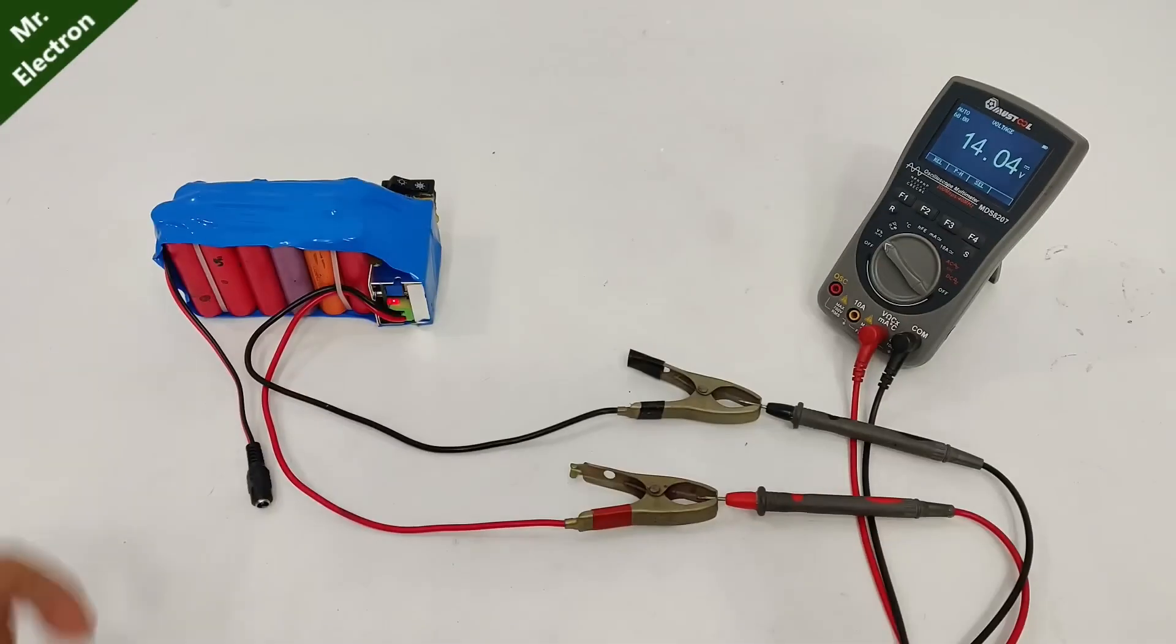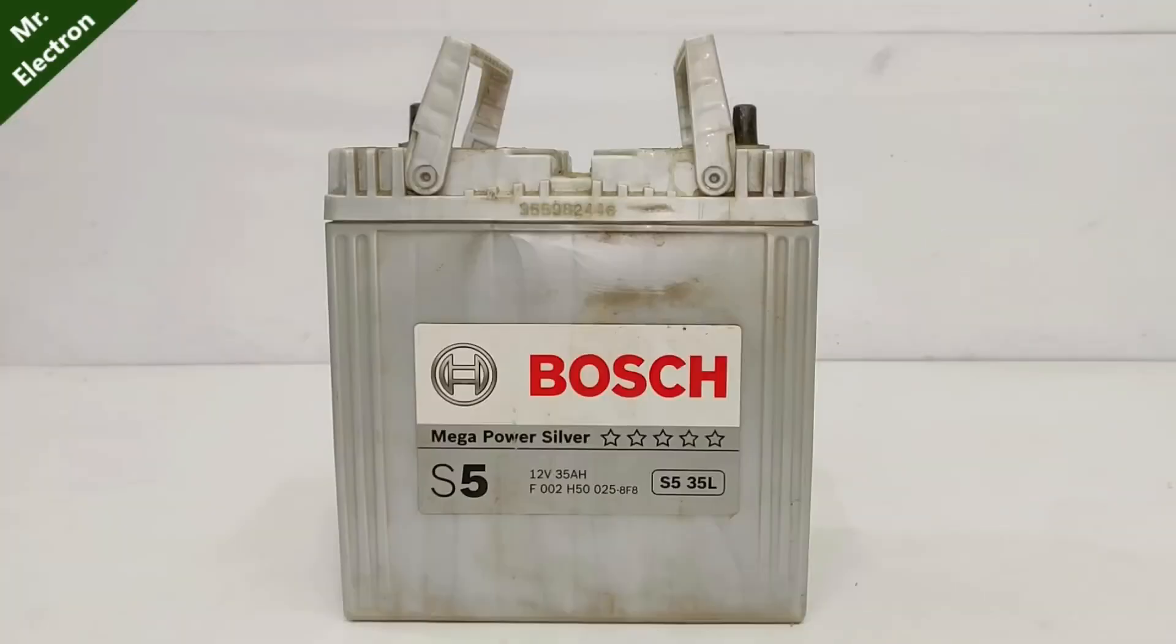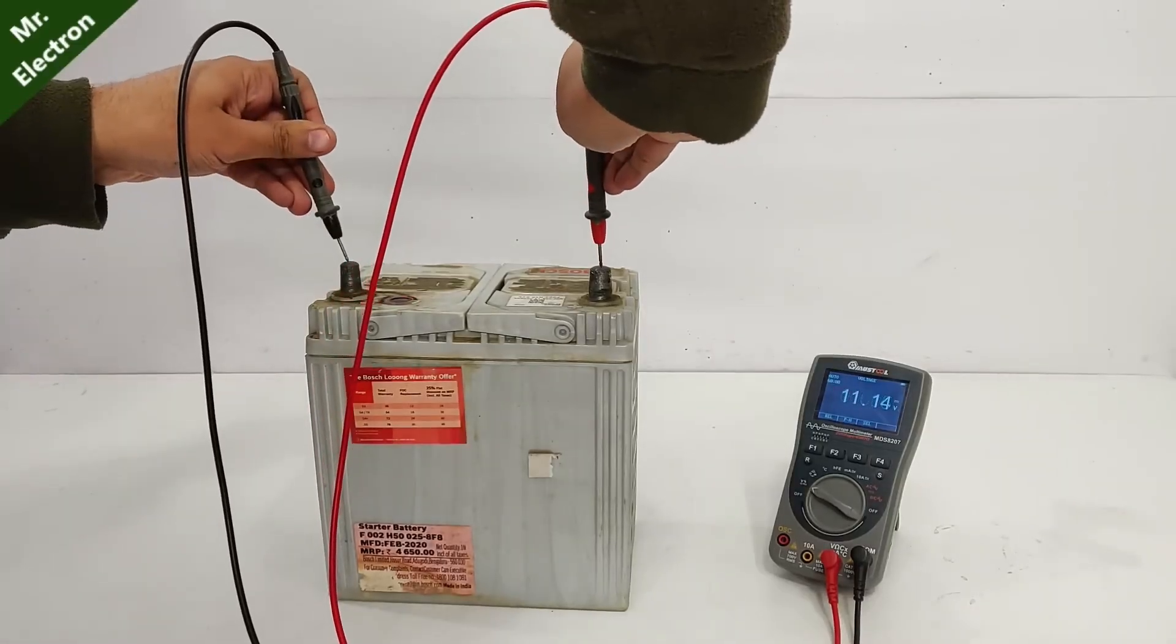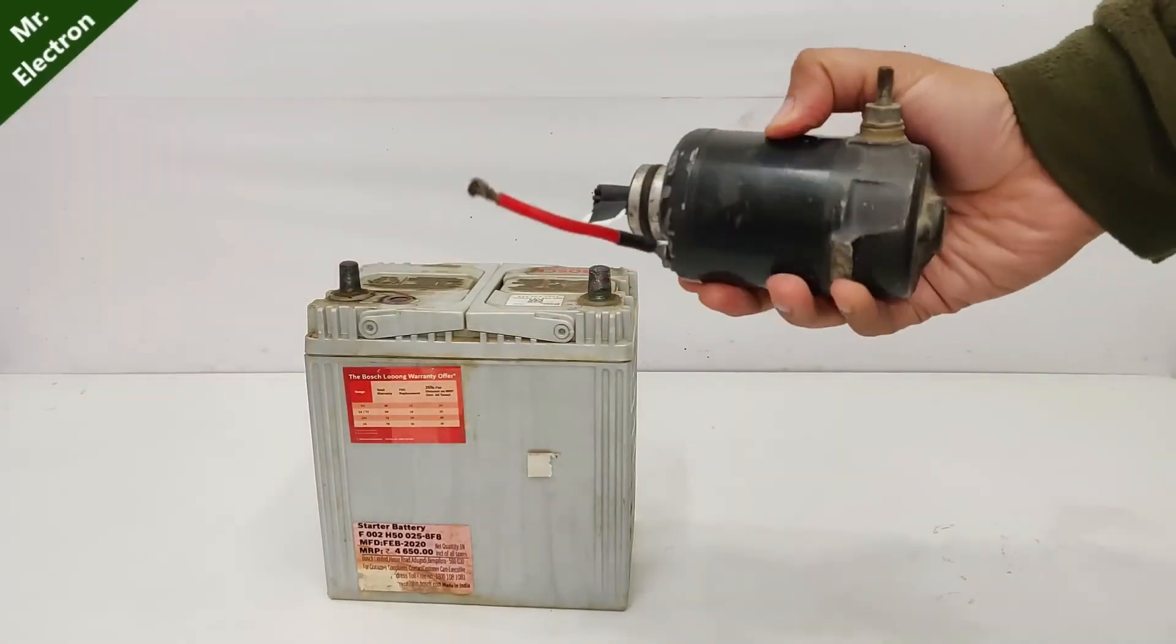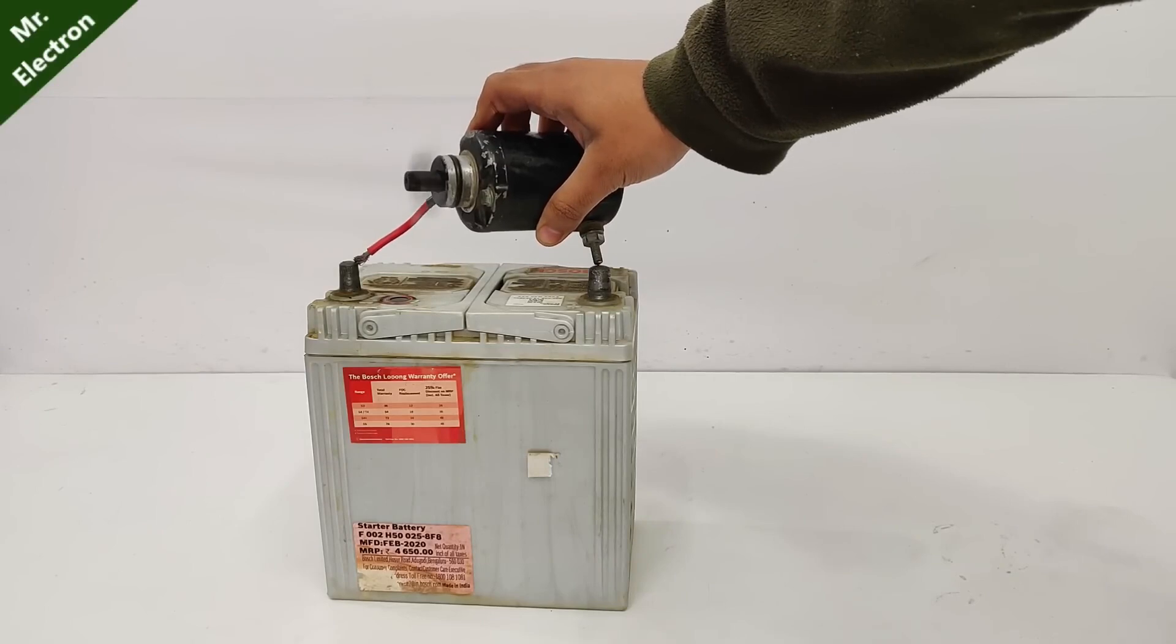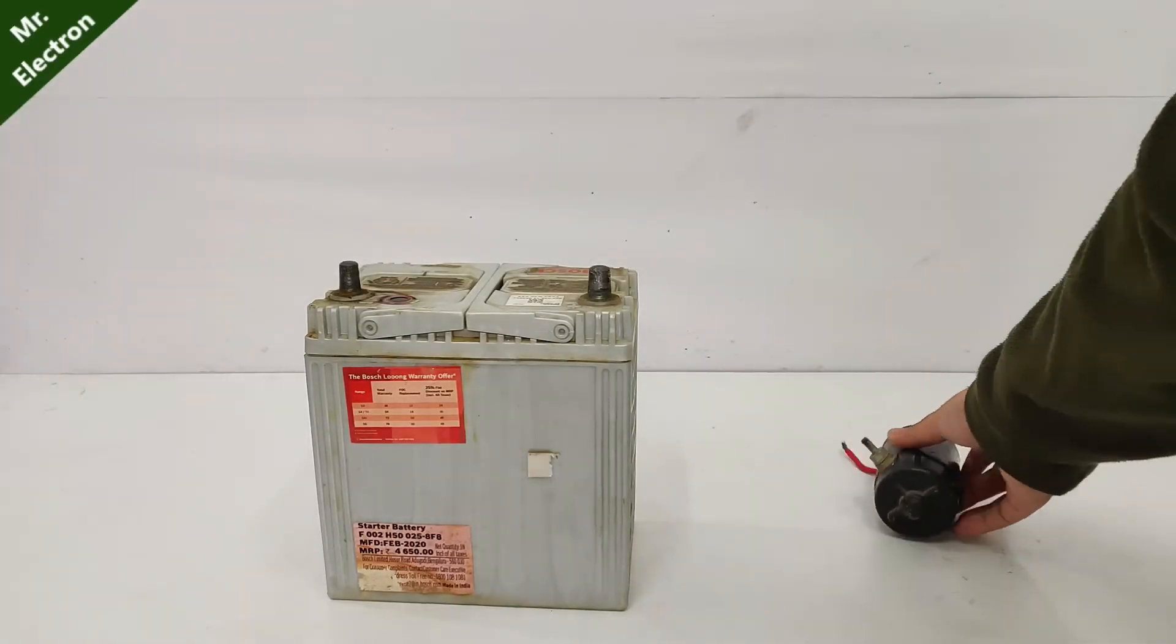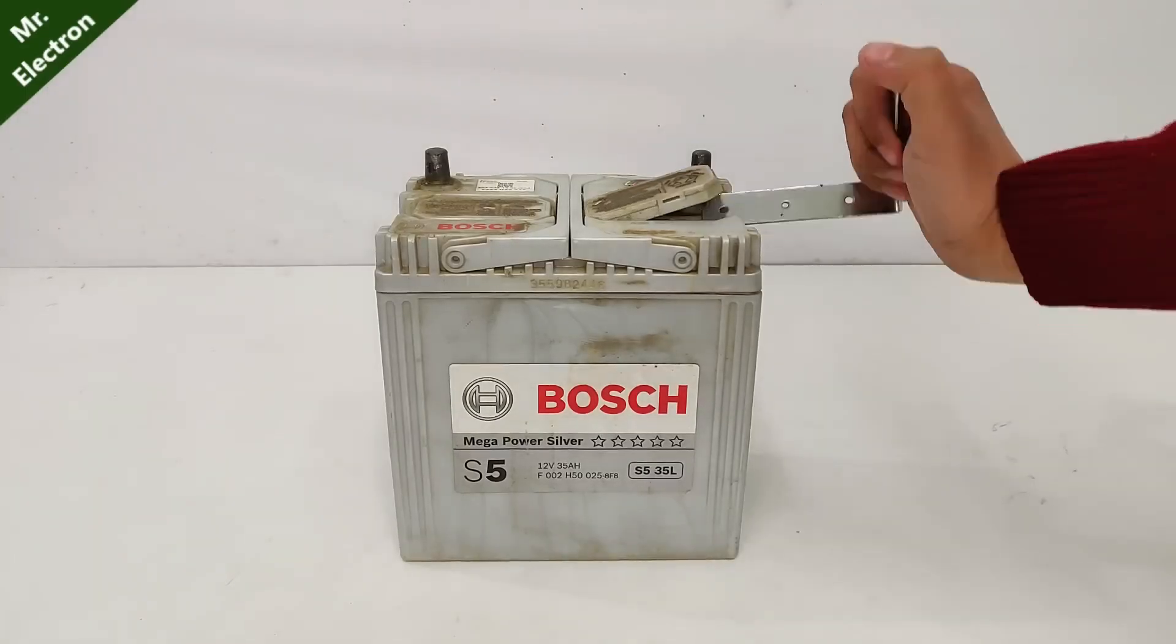Now I have this dead old car battery, and it's rated at 12 volts 35 ampere hour. Its open circuit voltage is 11 volts, so it is completely discharged. And if we do a load test with this bike starter motor, as you can see that it is running very slow. So let's restore the battery and recharge it with my portable battery charger. So let's restore it.